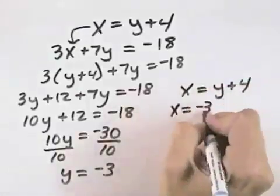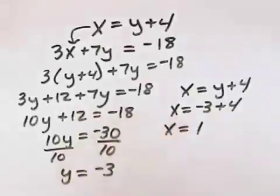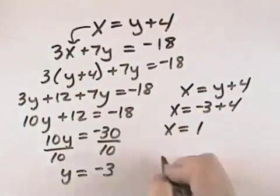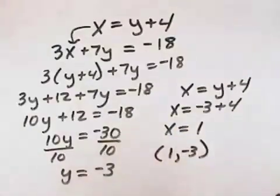So that x equals negative 3 plus 4. And negative 3 plus 4 is 1, so that means x equals 1. So our solution is x equals 1, y equals negative 3, which can also be expressed as an ordered pair, 1, negative 3.